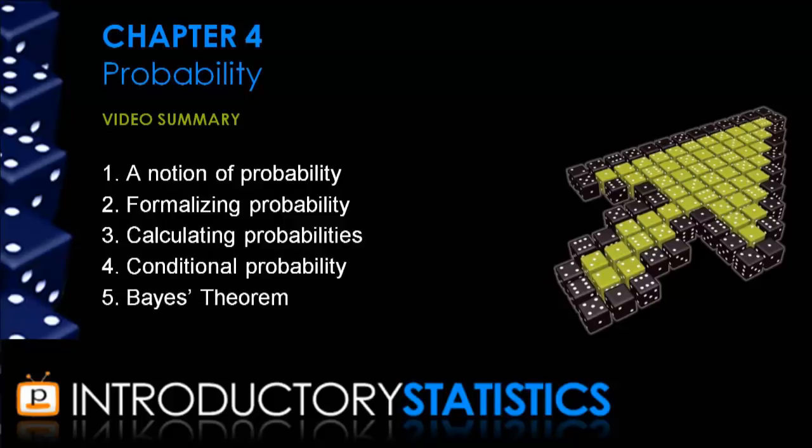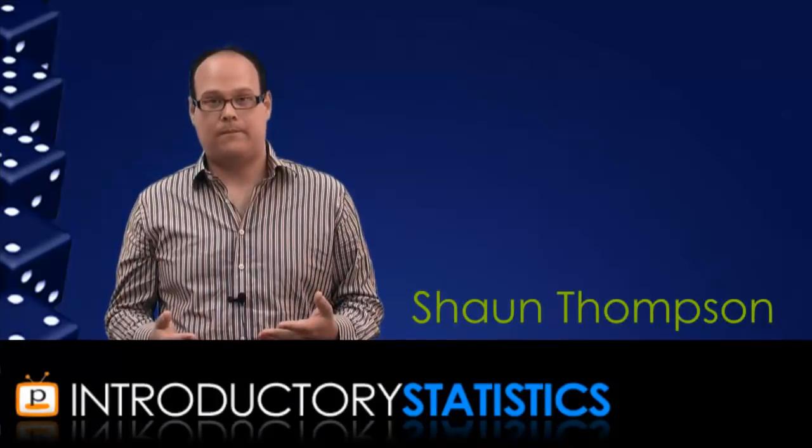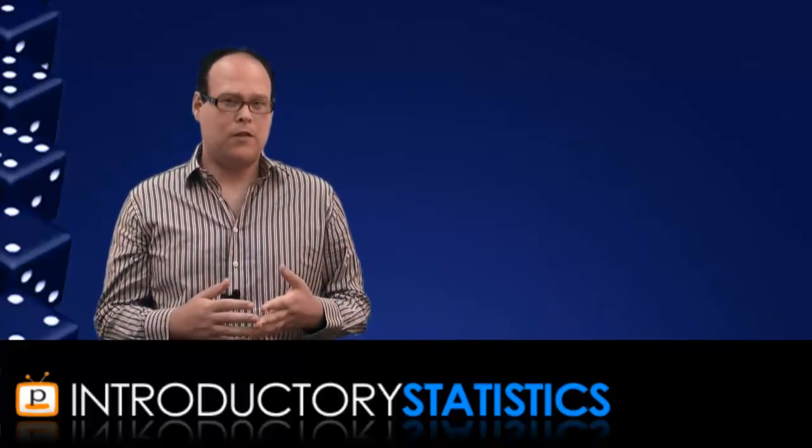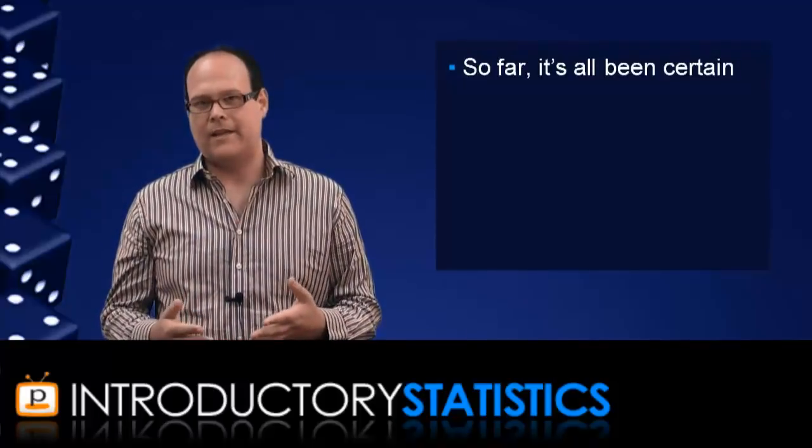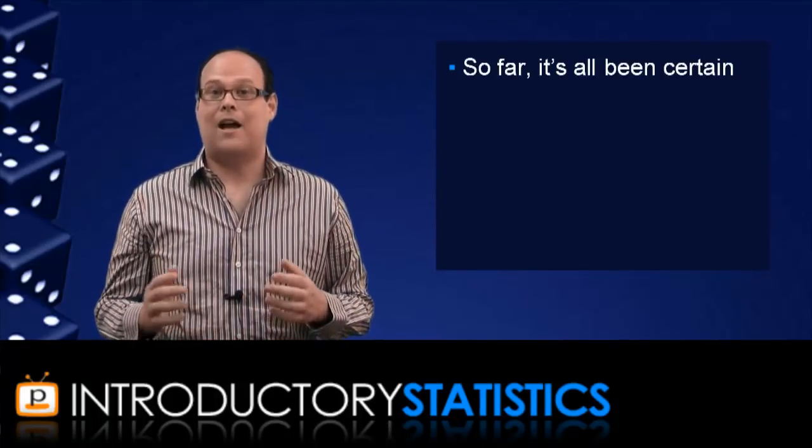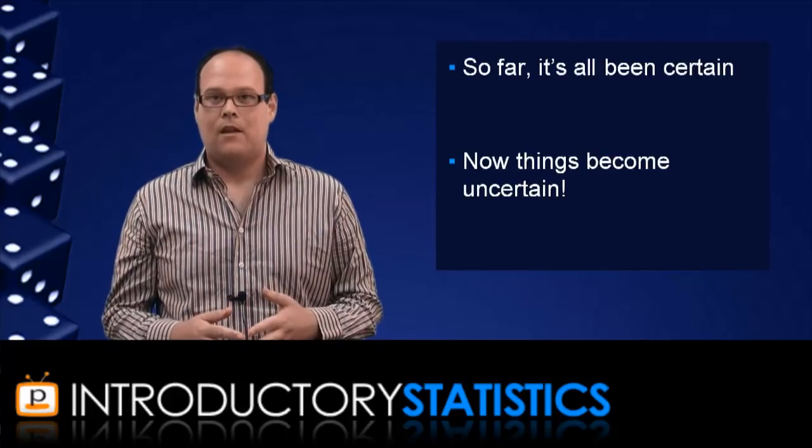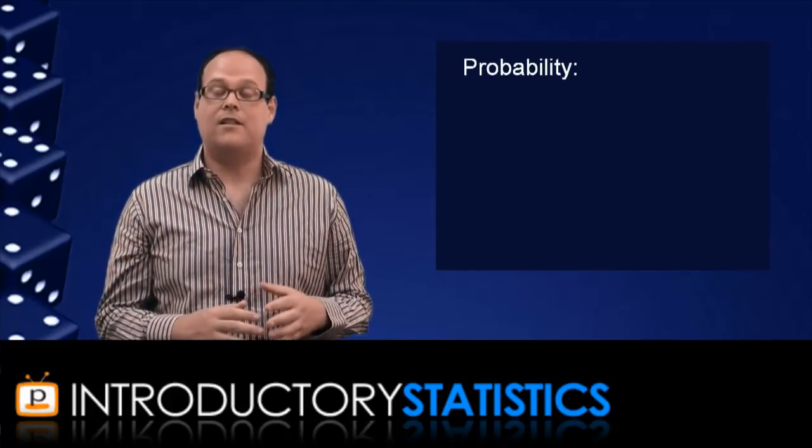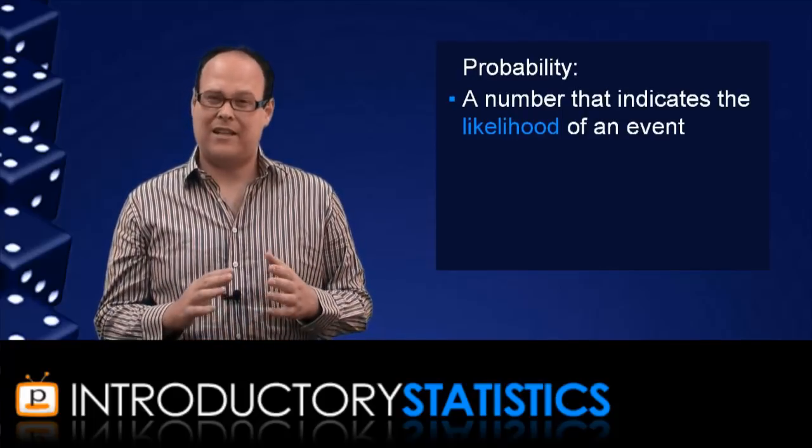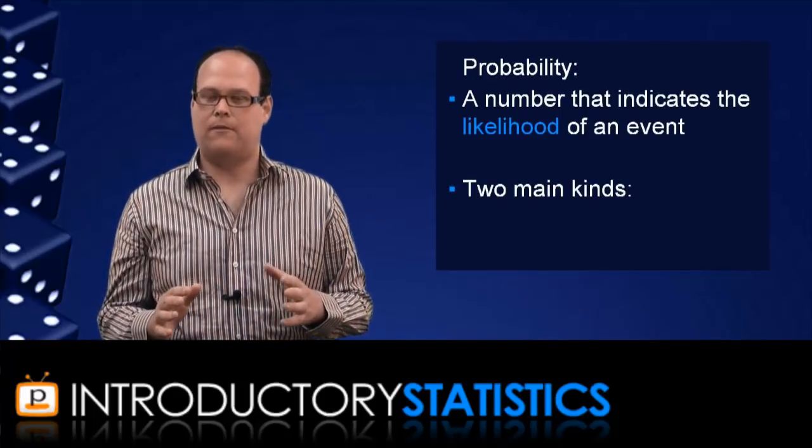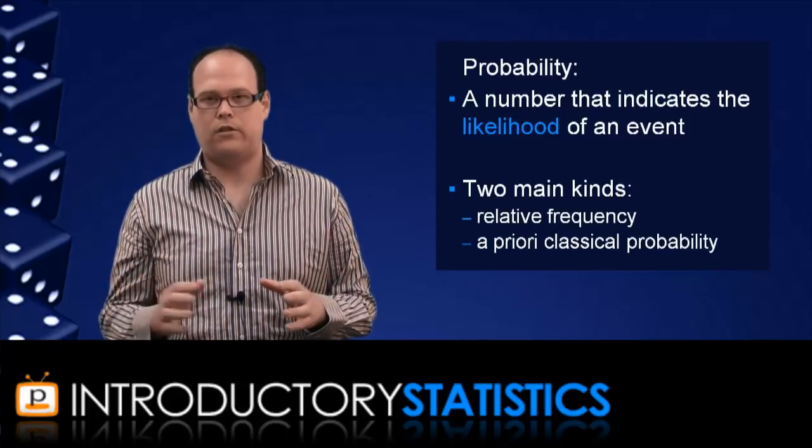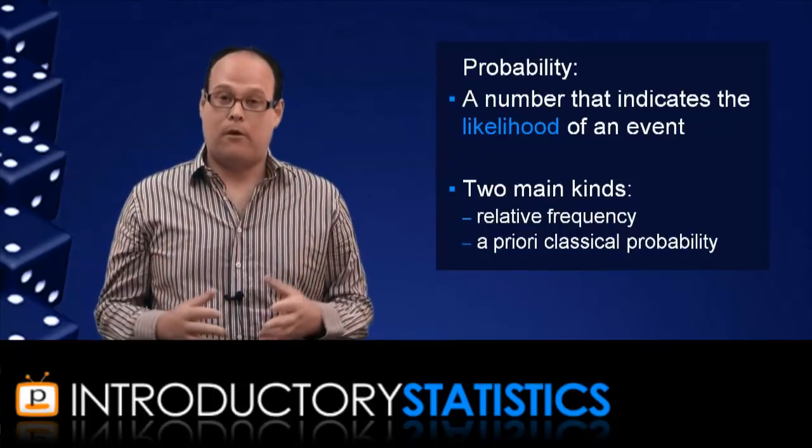So far in this video series, we've mostly been dealing with certainty. When you're given a data set and all you're being asked to do is look at it and describe it, then in principle, you can be certain about what you're doing and what you're saying. But we're about to enter a rather interesting part of statistics where the certain becomes uncertain, and that's where probability comes in. The basic idea with probability is that it's a number that we assign to indicate the likelihood that an event will occur. But having said that, there's two major notions of probability: relative frequency and the a priori classical approach to probability.